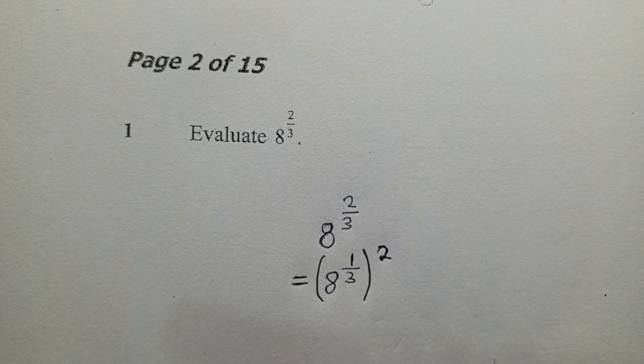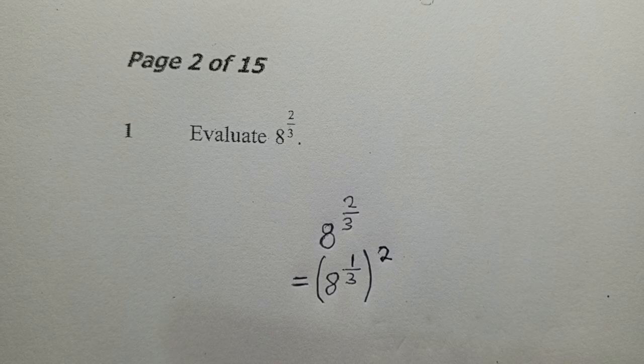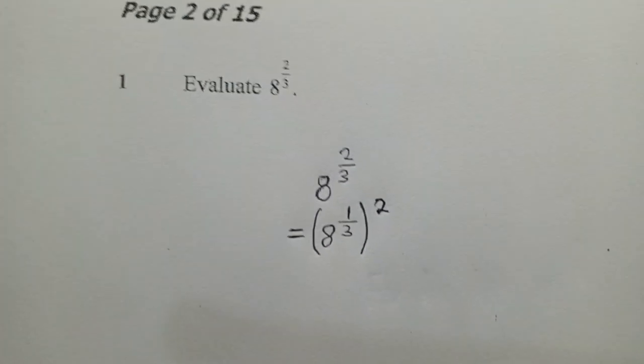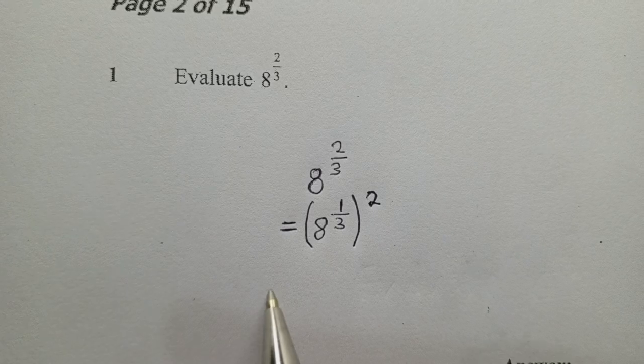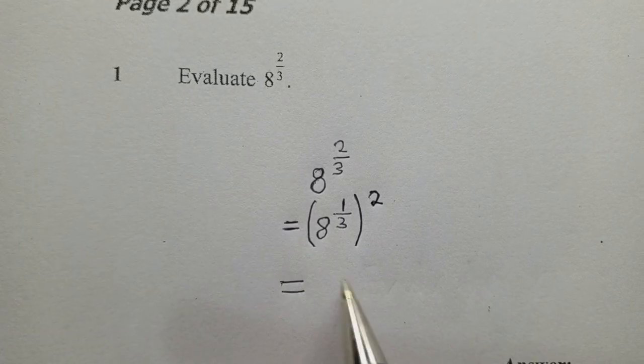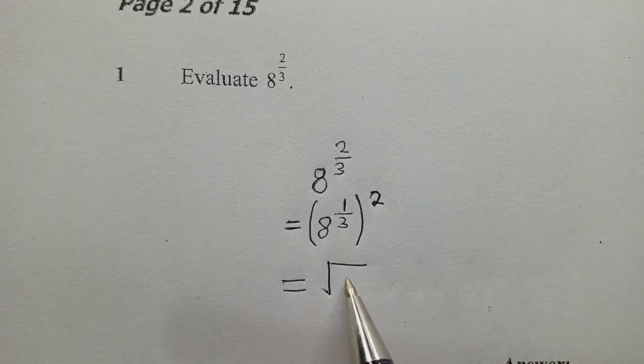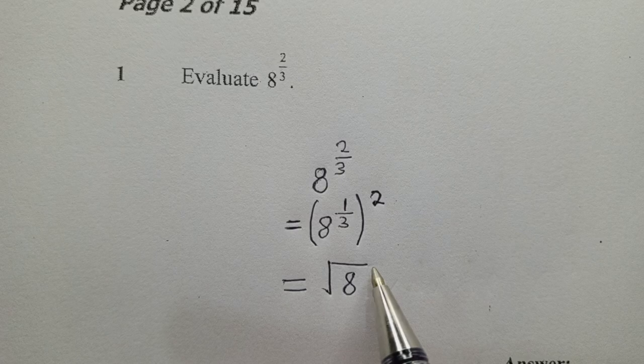Now what does 1 over 3 mean? It means a cube root. That is a cube root. So we shall say cube root of 8. So this is how we're going to write it.